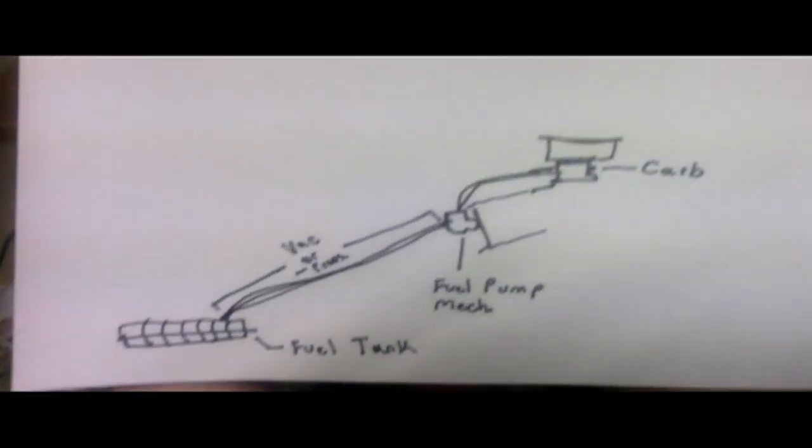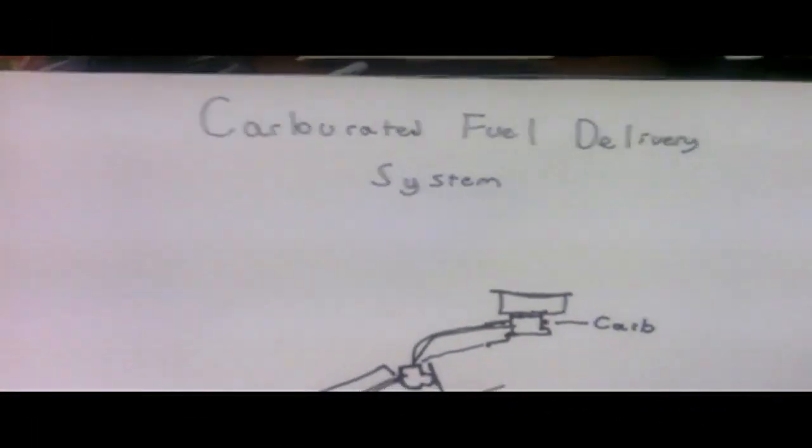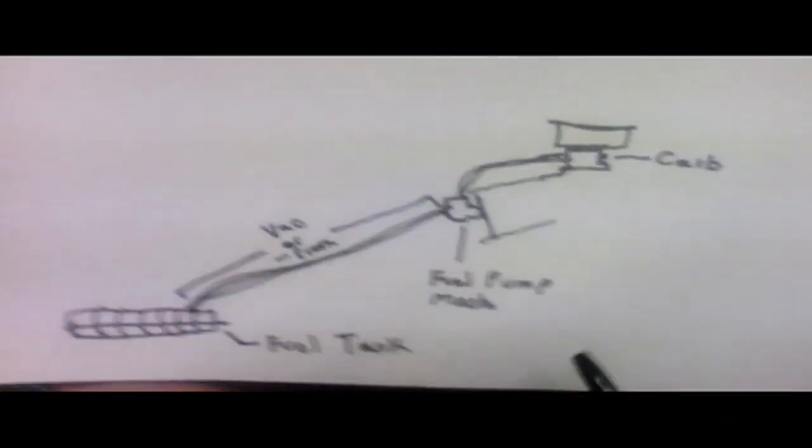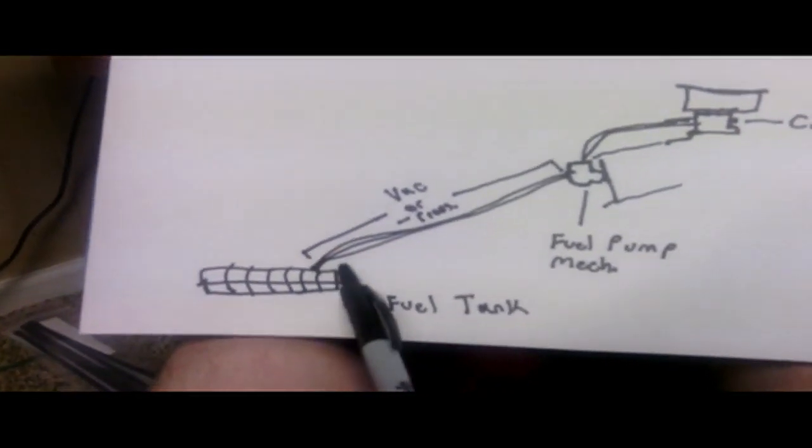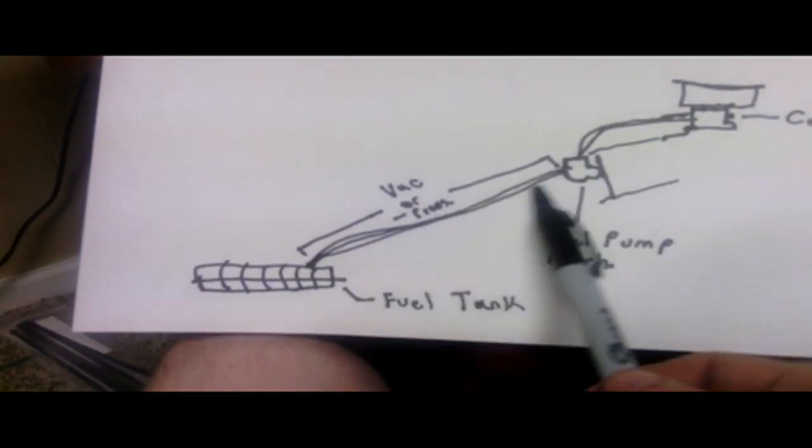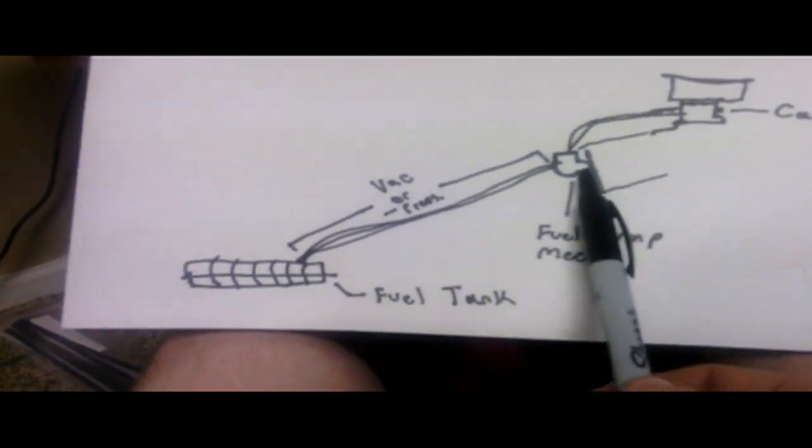Okay, so we can see here that I kind of get my best to draw a diagram for you all. Carbureted fuel delivery system. In this type of system, of course, you have your fuel tank. And then you'll have the fuel lines running up to a mechanical fuel pump.